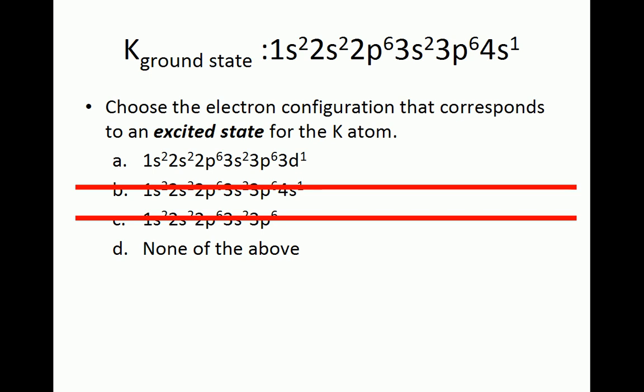Remember, we are looking for an excited state electron configuration for potassium, which means that an electron will occupy an orbital with a higher energy value before one with a lower energy value. So we must determine if this is the case for choice A or if choice D is the correct answer.